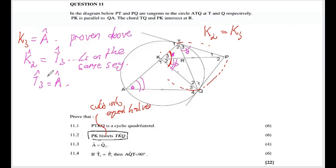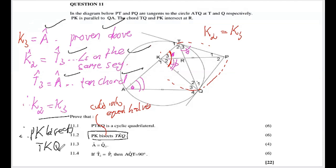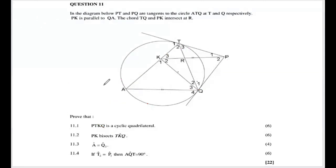Since K2 equals A and K3 equals A, we conclude K2 equals K3. The reason for T3 equaling A was tan-chord. With statement-reason-statement-reason-statement-reason, that's six marks. By proving K2 equals K3, we have proven that PK bisects angle TKQ, which was the whole point.